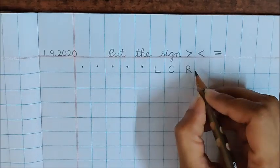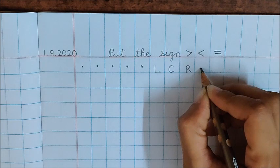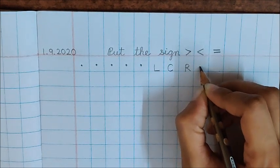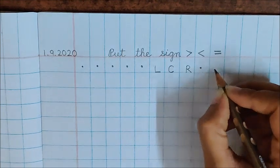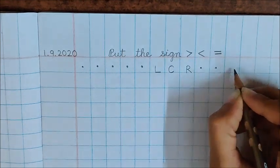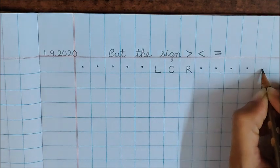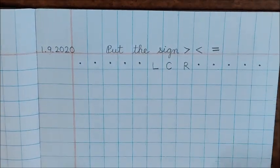Now, children, after R, again we have to put 5 dots. Count and put. 1, 2, 3, 4, 5. Done, children? Very good.